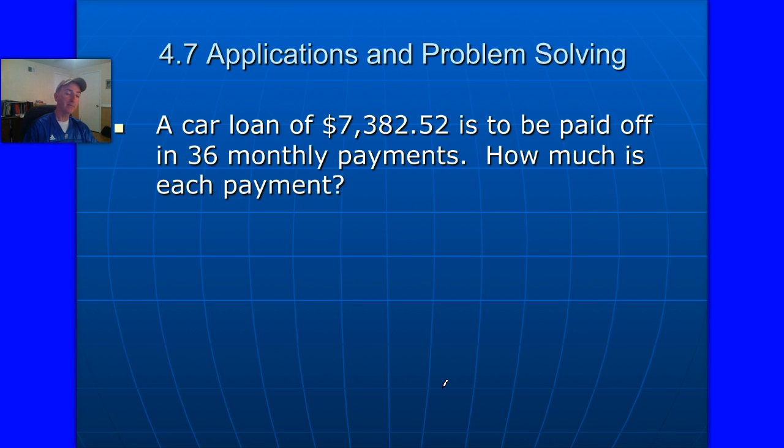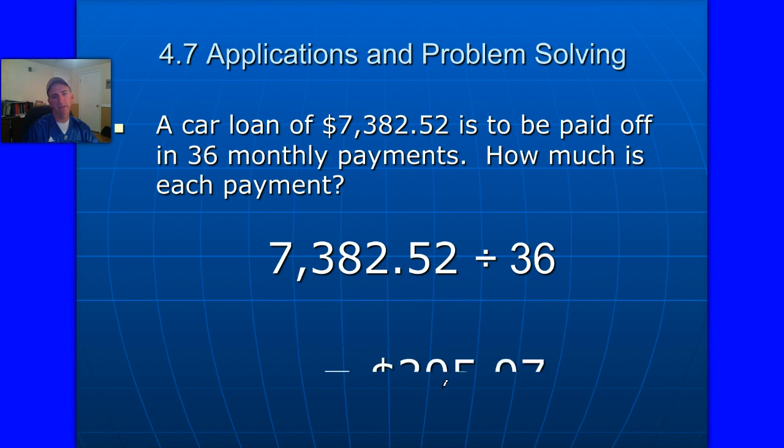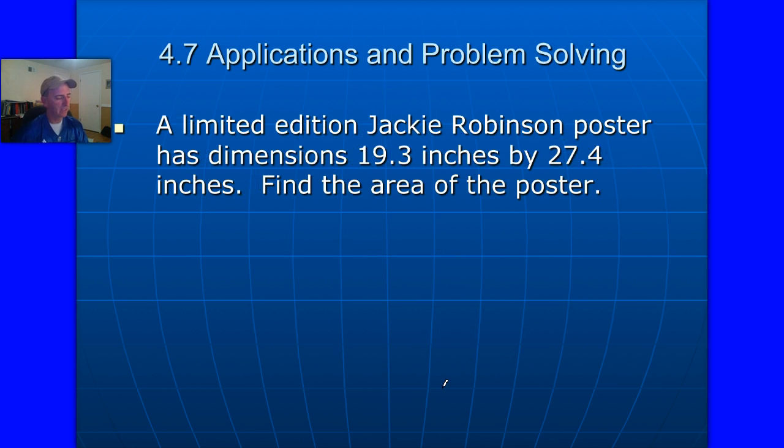So bottom of page 14, car loan payment. $7,382.52 is to be paid off in 36 monthly payments. How much is each monthly payment? Well, this is a division question right there. You have the money, it's being divided into 36 payments, so it comes out to be $205.07. And hopefully that makes sense for you.